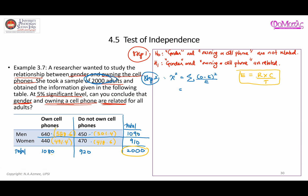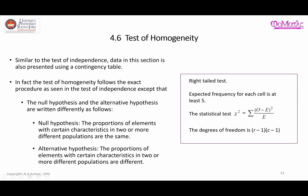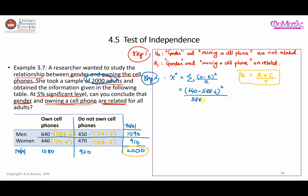We compute the chi-square test statistic: (640 − 588.6)² / 588.6 + (440 − 491.4)² / 491.4, continuing for all remaining cells, with the last term being (470 − 418.6)² / 418.6. The result is 21.446.